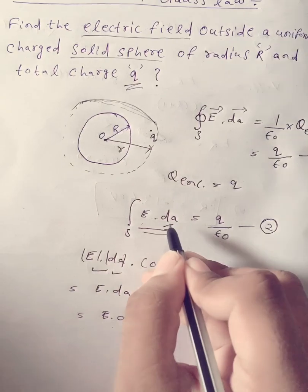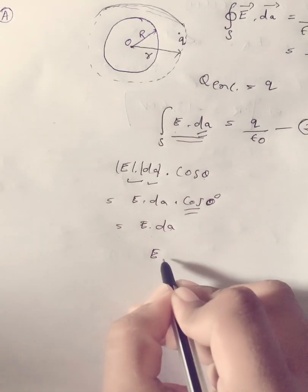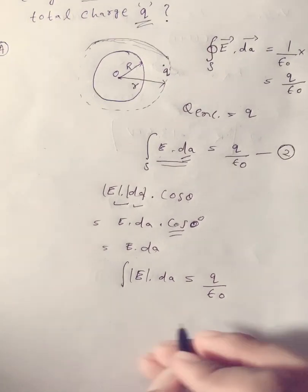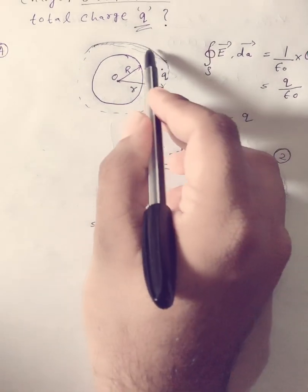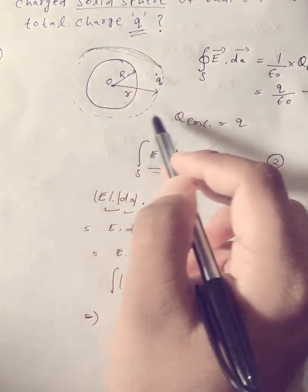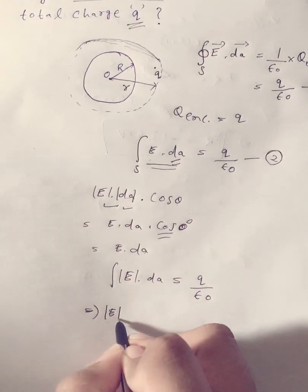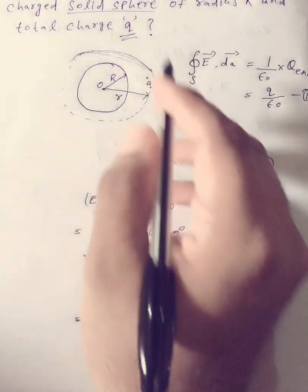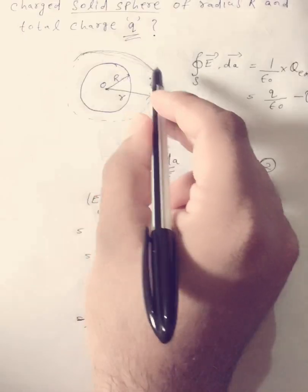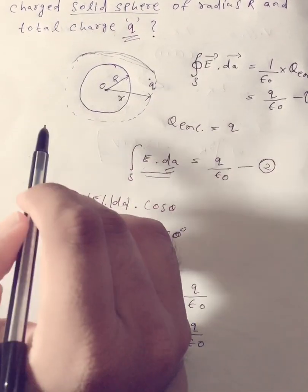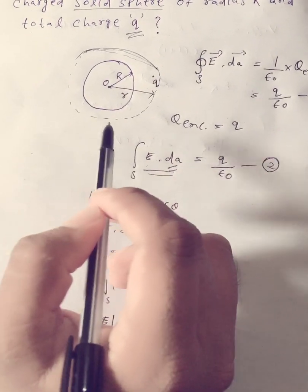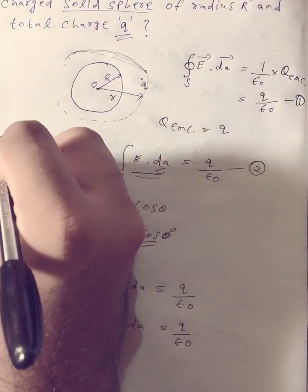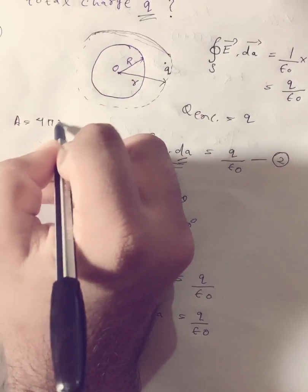So I can write E dA instead of E dot dA, giving the integral of E dA equals Q by epsilon-0. Since the electric field is uniform and the same over the closed Gaussian surface, I can take E outside the integral. The area of the imaginary Gaussian surface — which is a sphere of radius r — is 4 pi r squared.